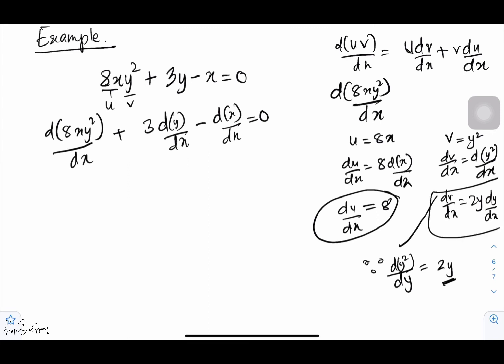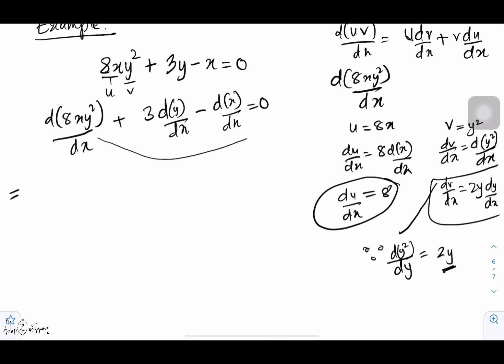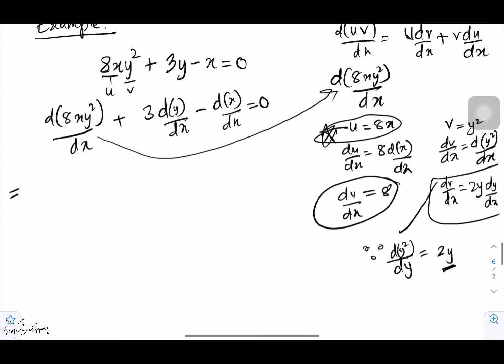This is what we get differentiating dv over dx. Now you can directly check here: differentiation of 8xy² over dx is u, the value of u is 8x, then dv over dx is 2y dy over dx, then plus v times the value of du is 8. So this is the term we get when you differentiate 8xy².